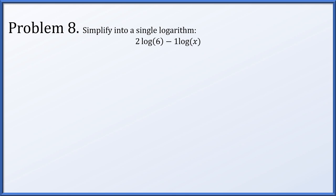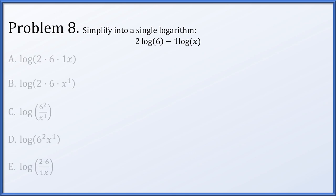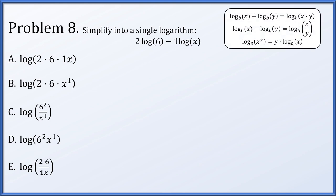Problem 8: simplify the expression 2 times the logarithm of 6 minus 1 times the logarithm of x into a single logarithm. Using the power rule, scalar multiples become exponents: the logarithm of 6 squared minus the logarithm of x to the first. Since this is a difference of logarithms, we express it as a quotient: the logarithm of 6 squared over x, which is exactly option c.